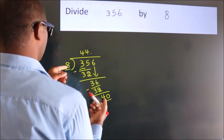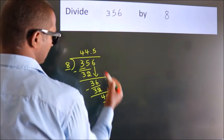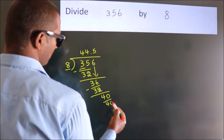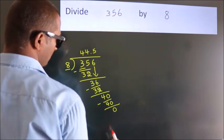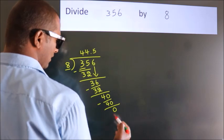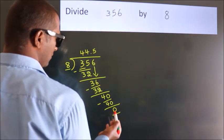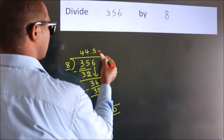8 times 5 is 40. Now we subtract. We get 0. Here we got remainder 0. So this is our quotient.